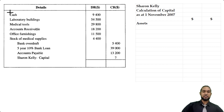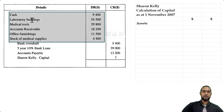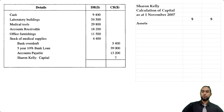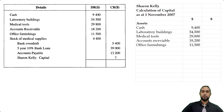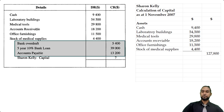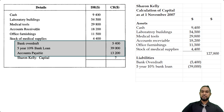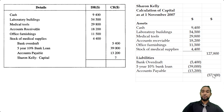We're just going to take the assets — cash, lab buildings, medical tools, accounts receivable, office furnishings, and stock of medical supplies — and take a subtotal. Next, we're going to put our liabilities: bank overdraft, five-year 10% bank loan, and accounts payable, with a subtotal of 57,006. And all we have to do is subtract to get our capital balance.